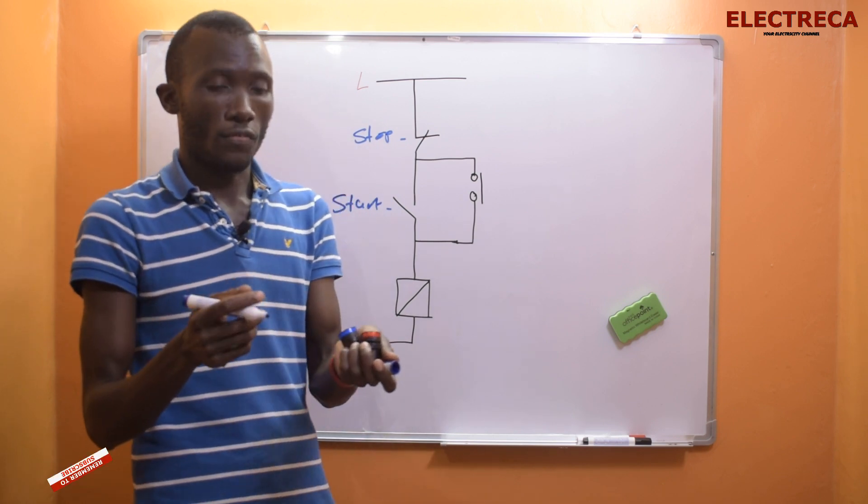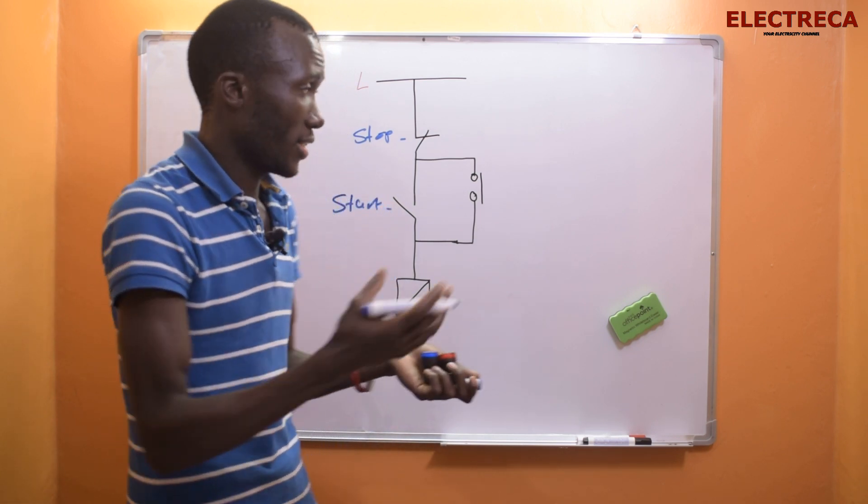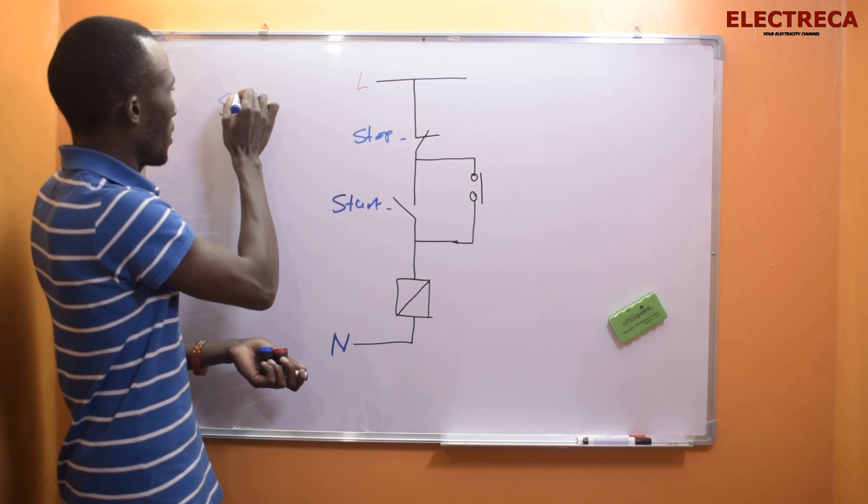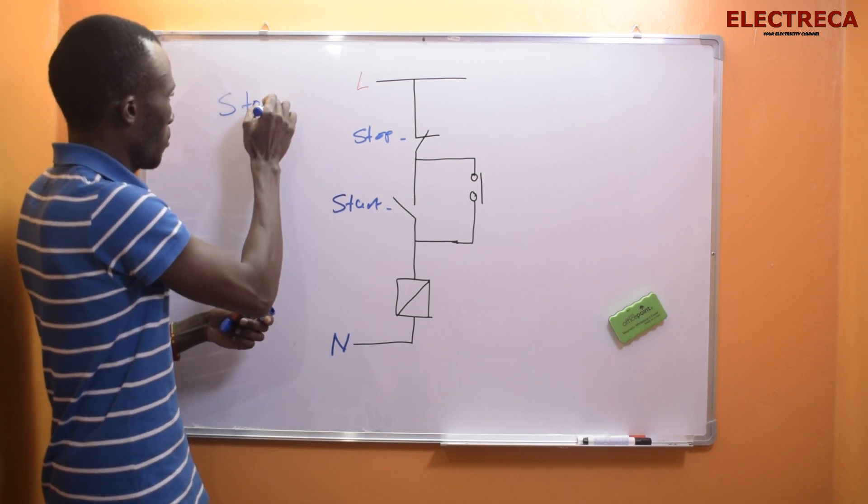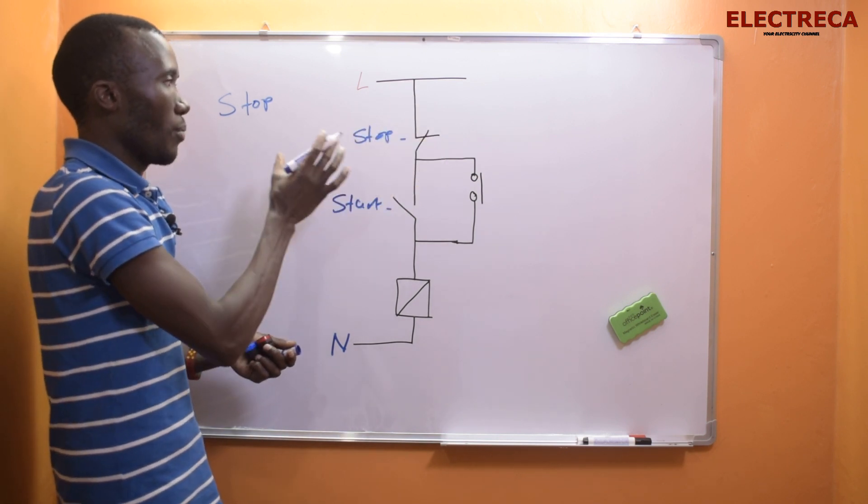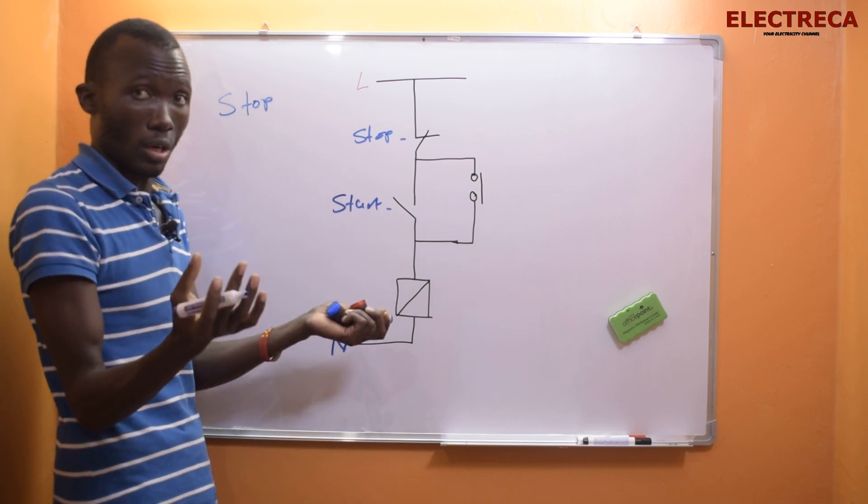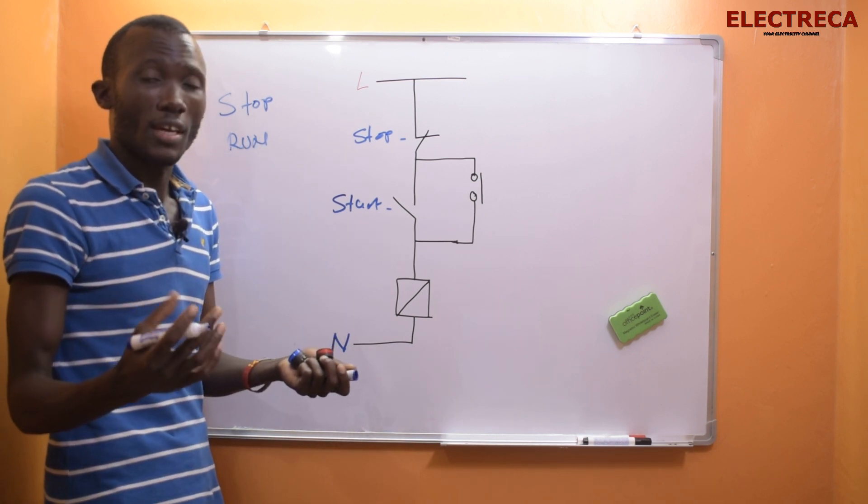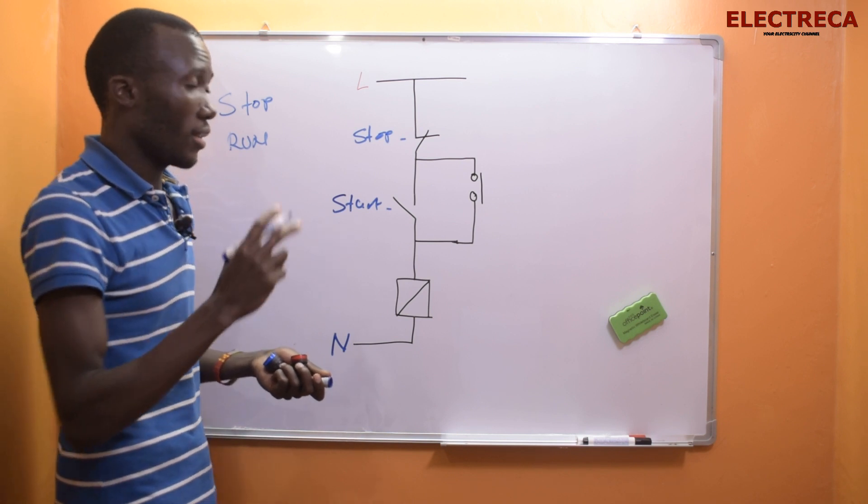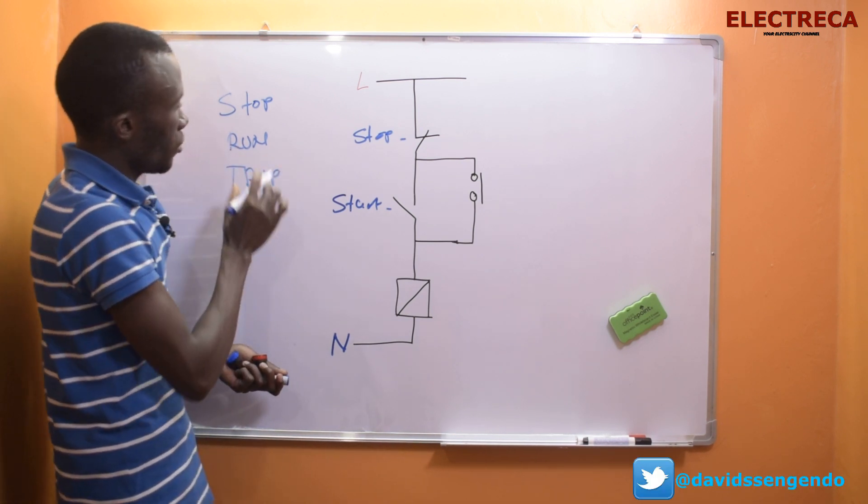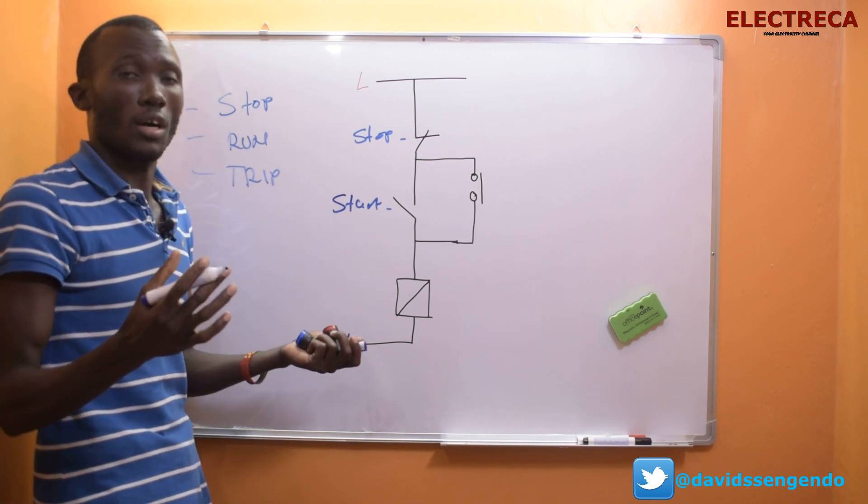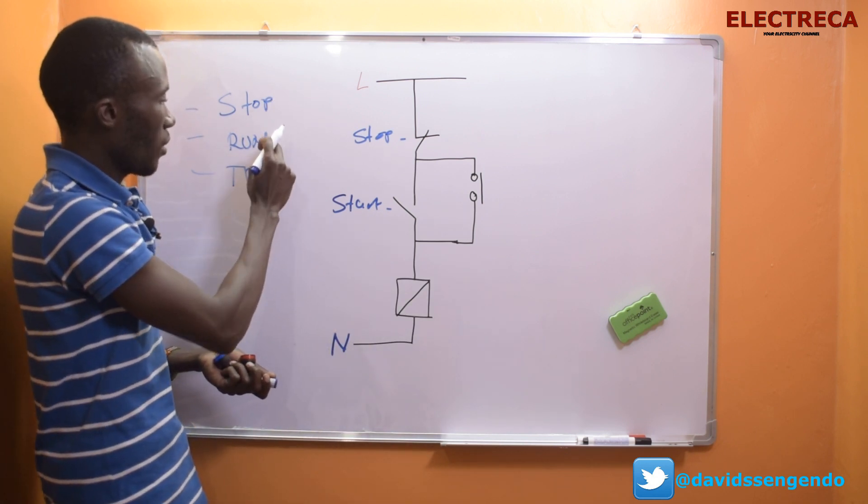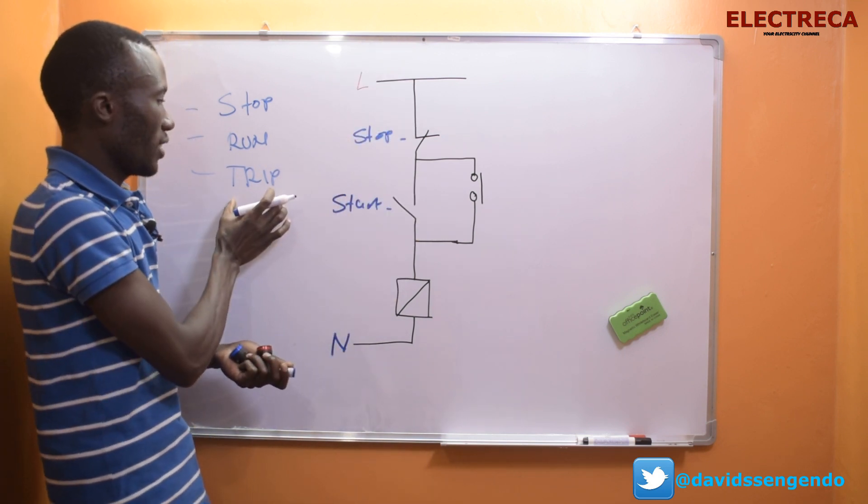You have start right there and you have stop right there. And then you have three lights, and you want to indicate things like if the pump stopped, a certain light will glow and become on. You also want to indicate when the pump is running, and you want to indicate when the pump trips. These are the most crucial indications in such a simple circuit.